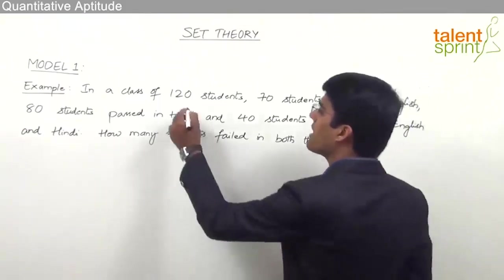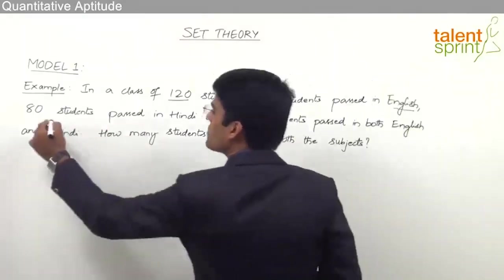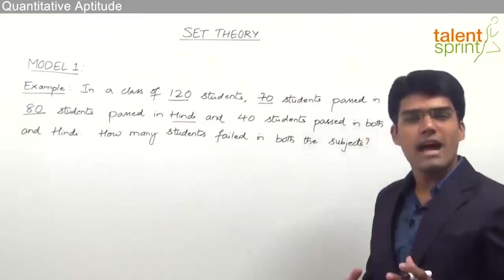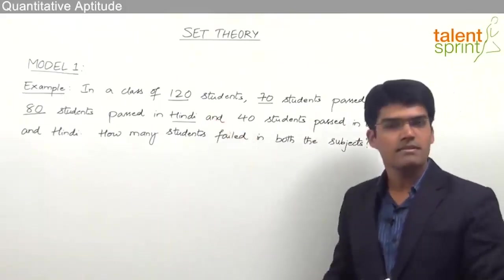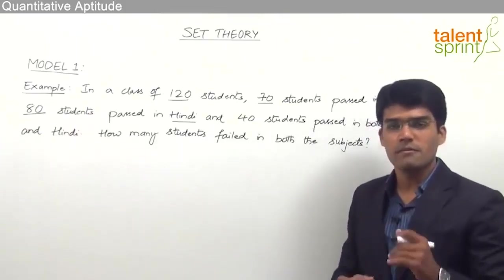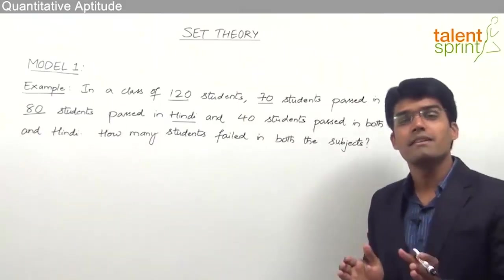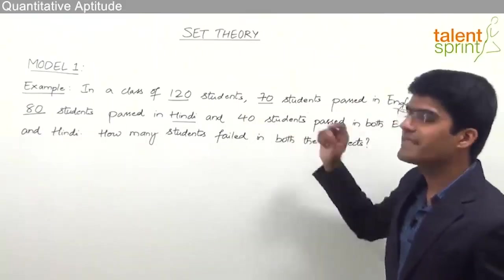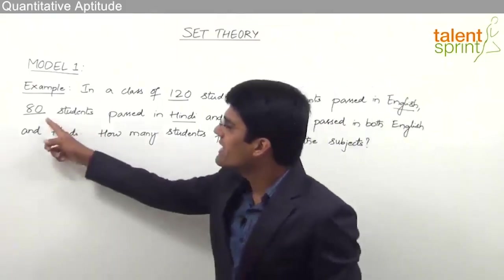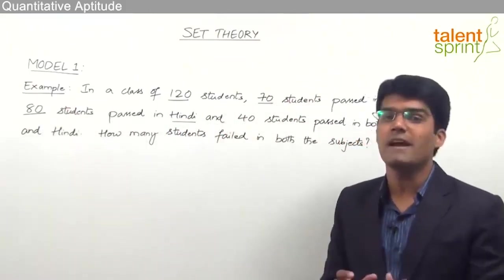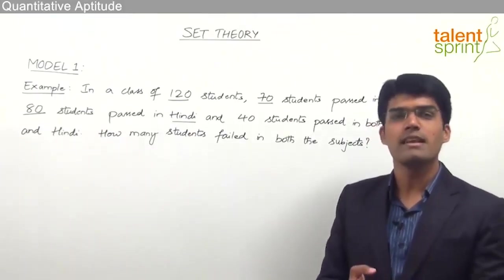The total number of students is 120, out of which 70 passed in English and 80 passed in Hindi. The two sets here are English and Hindi. Remember, when it says 70 students passed in English, this doesn't mean 70 passed only in English — out of these 70, some may have passed in English as well as Hindi. Similarly, 80 students passed in Hindi doesn't mean only Hindi.